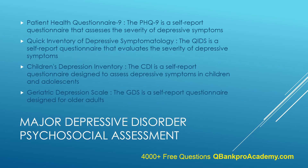The Patient Health Questionnaire-9 (PHQ-9) is a self-report questionnaire that assesses the severity of depressive symptoms. It includes nine items that correspond to the criteria for MDD in the DSM-5. Patients rate the frequency and severity of their symptoms over the past two weeks, with scores ranging from 0 to 27 and higher scores indicating greater symptom severity. The HDRS is a clinician-administered assessment tool used to evaluate the severity of depressive symptoms through a structured interview, with the total score reflecting the severity of depression.